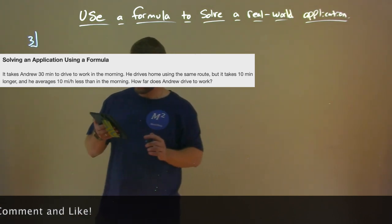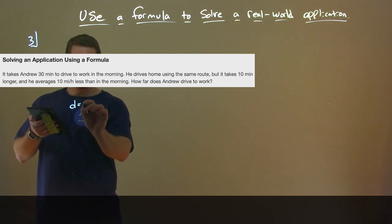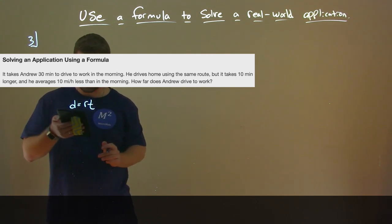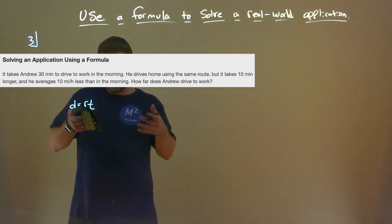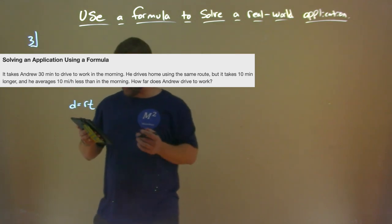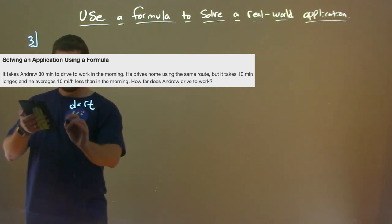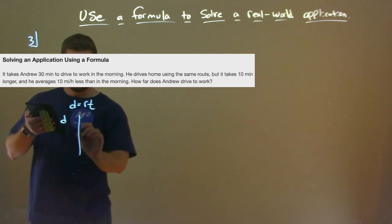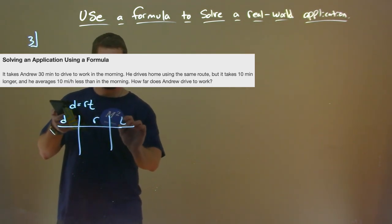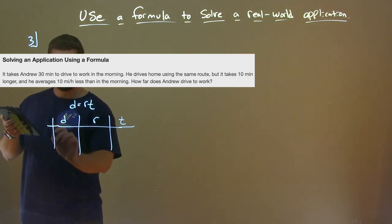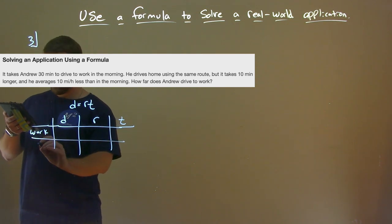First thing: the formula. The distance formula we know is distance equals rate times time. On his trip to work, it took him 30 minutes, which is equal to half an hour. So what we can do is set up what we know about each variable — distance, rate, and time — for when he's going to work and when he's going home.